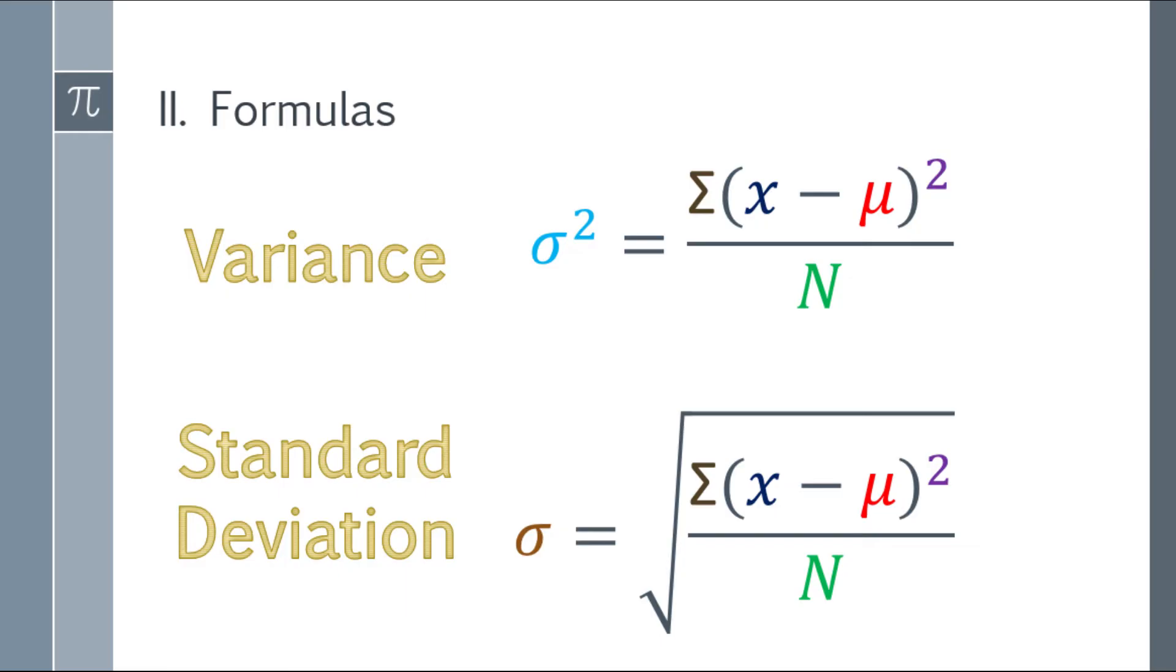For the standard deviation, just take the square root of the variance. Again, take note, this one is for population. So population size here, this one is for sample.